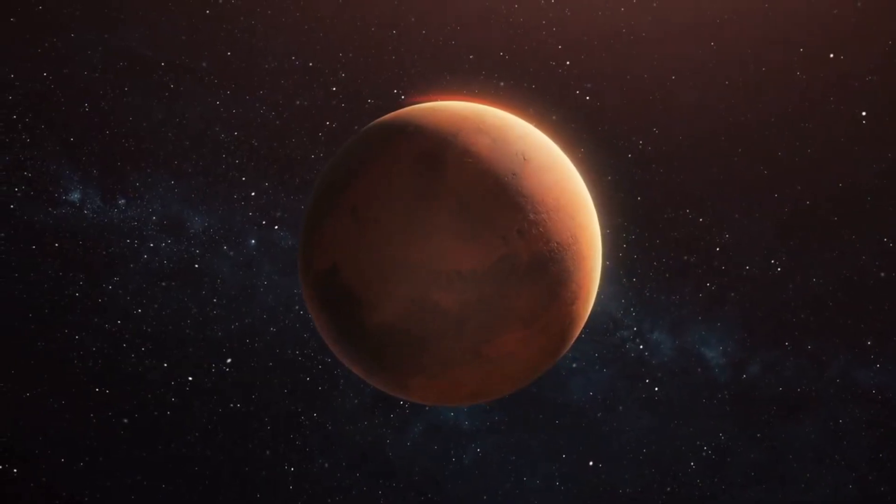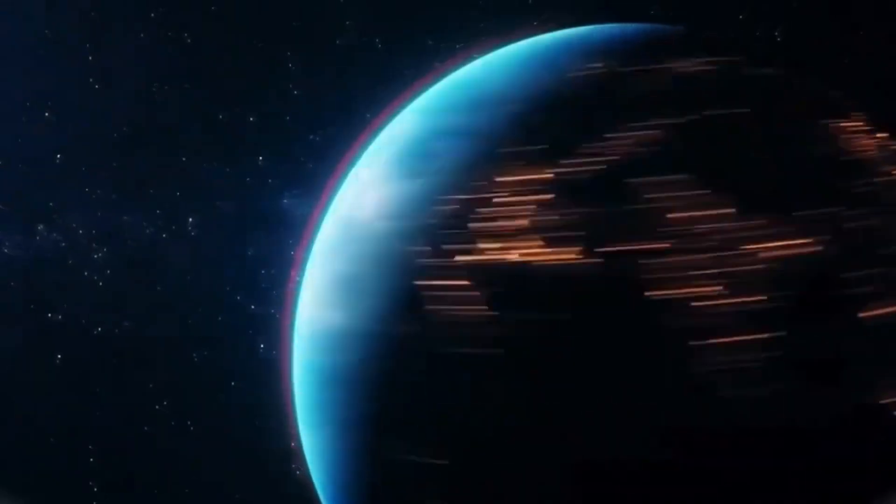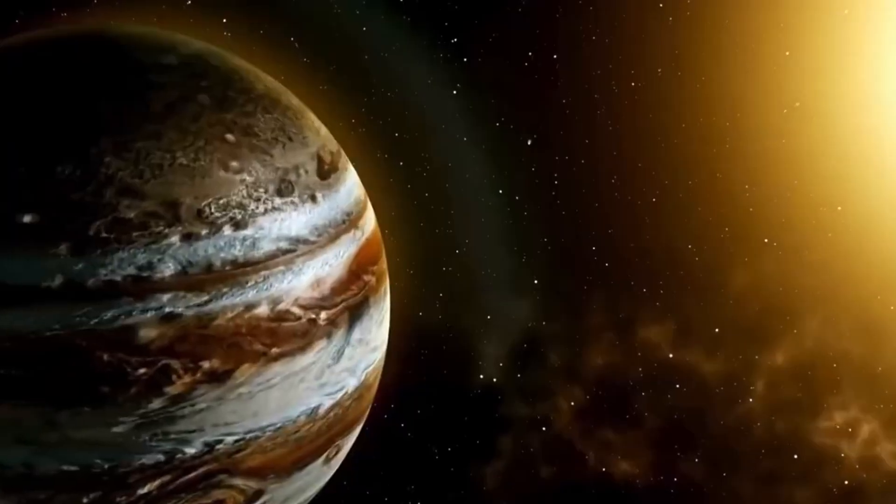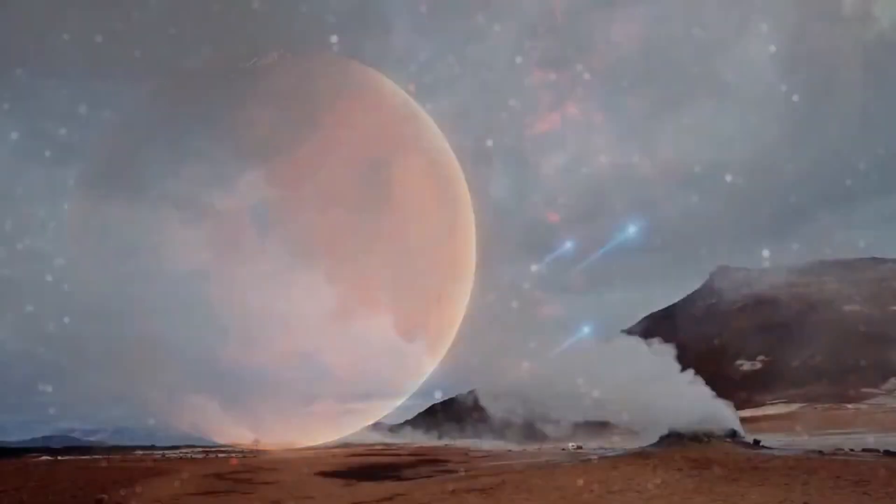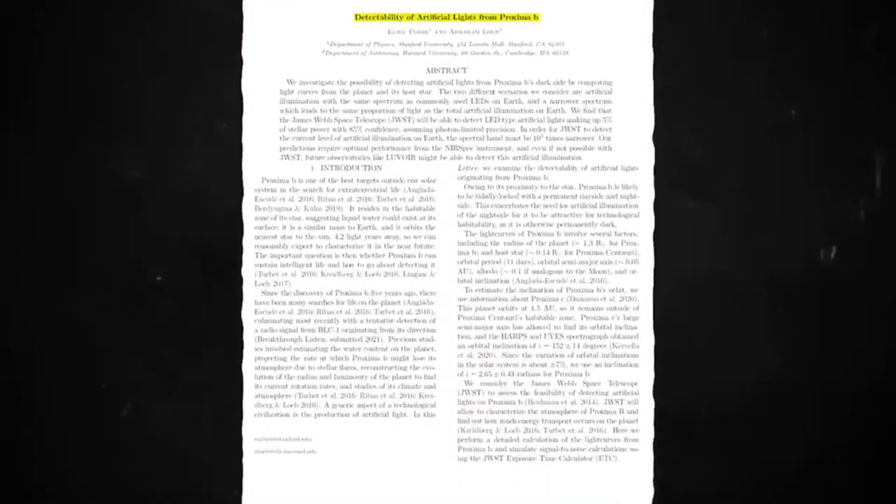As of the 1st of April 2024, there are 5,653 confirmed exoplanets in 4,161 planetary systems. Out of them, 896 systems had more than one planet.